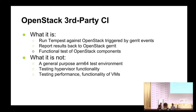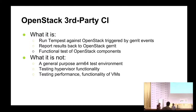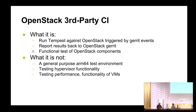So, what is this CI system and what is it not going to be? What it is: it's going to be Tempest running against OpenStack, triggered by Gerrit events from OpenStack Gerrit. We'll report the results back to their Gerrit system, and it's a functional test of OpenStack components. What it's not is going to be a general purpose ARM64 test environment. We're not going to test KVM explicitly, or any other dependencies of OpenStack explicitly — they'll get tested as part of running the OpenStack tests.